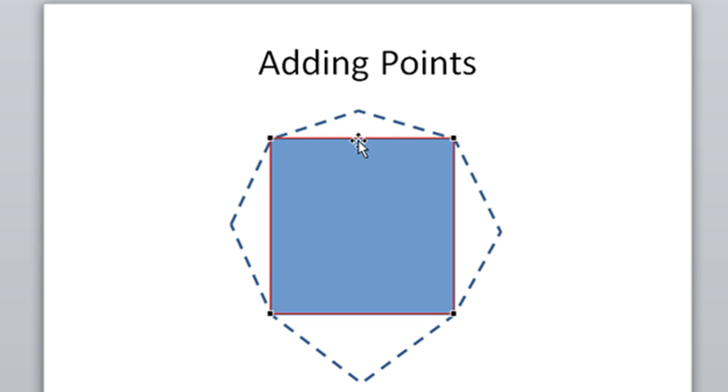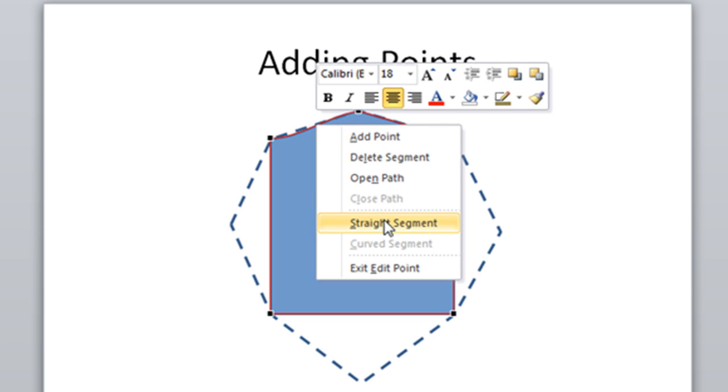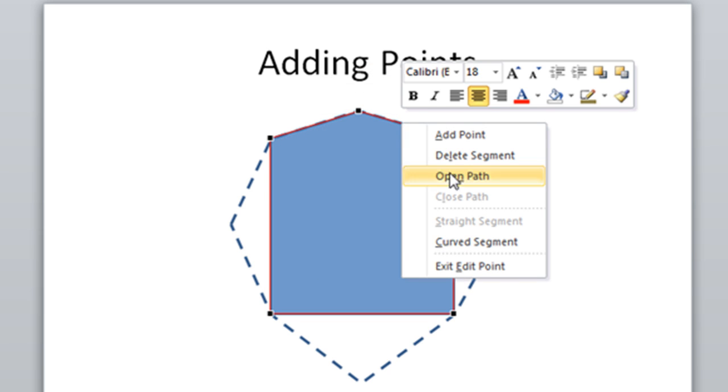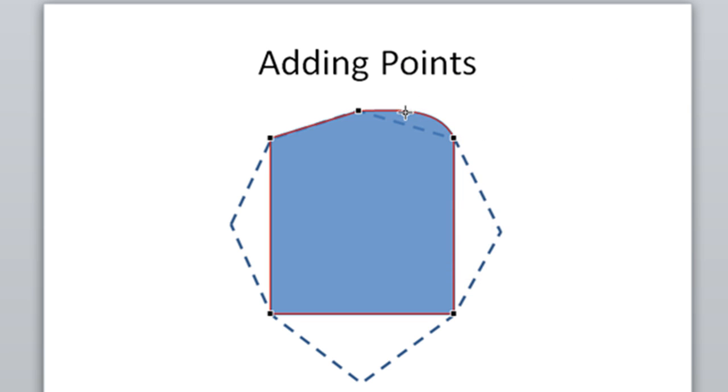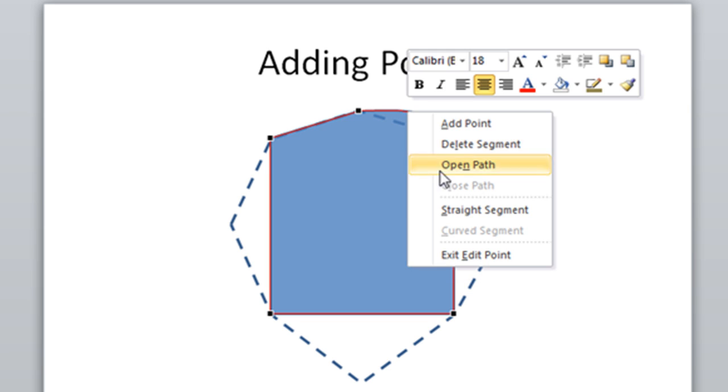The first way is by hovering your mouse over a segment and clicking and dragging. That will automatically add a point. Now adding a point that way will add a little bit of curve to the segments adjacent to the point you've just added. So you can adjust those handlebars like I showed you before or simply right-click and choose Straight Segment. That will make your segment either straight or curved.